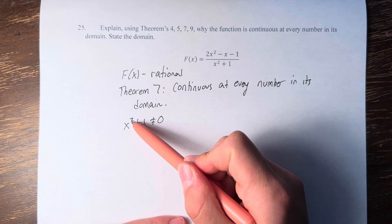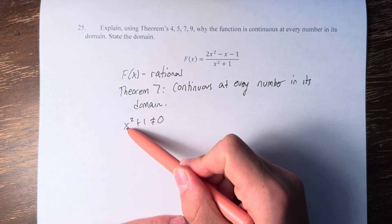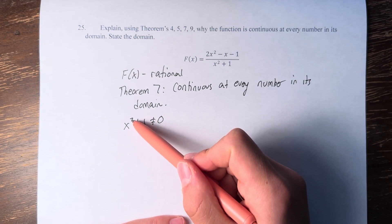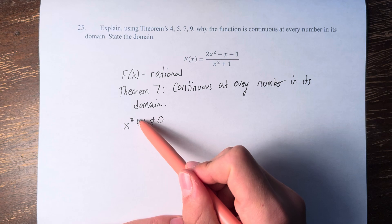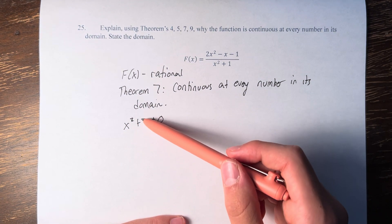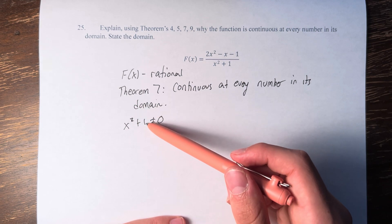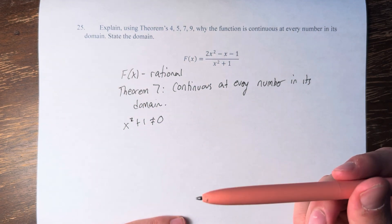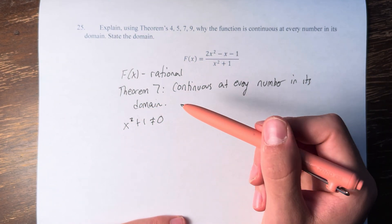So x squared, any number squared, is going to be either positive or equal to 0. So if you're adding 1 to that, at minimum, the lowest that this could possibly be is 1. Therefore, x² plus 1 is never equal to 0.